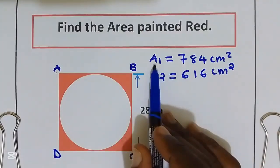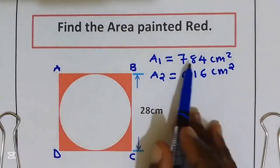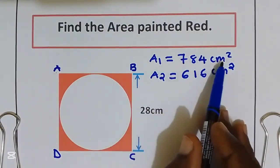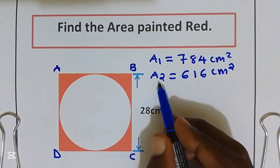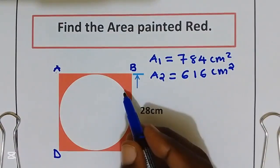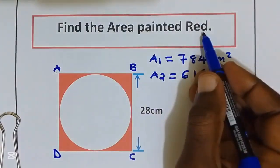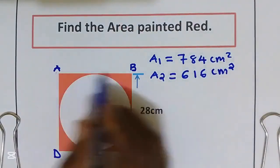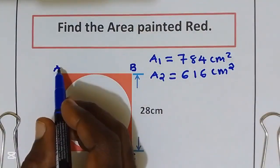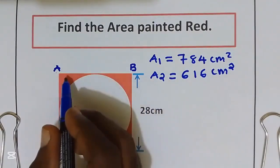We have area 1 which is the area of the square, 784 cm square. And area 2 is the area of the circle, 616 cm square. To get the area painted red, we take the area of the square and take away the area of the circle.